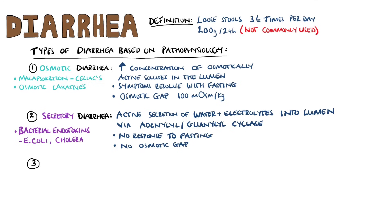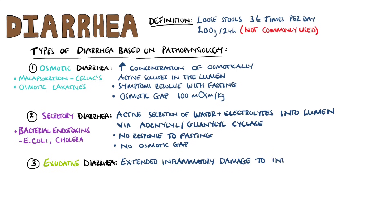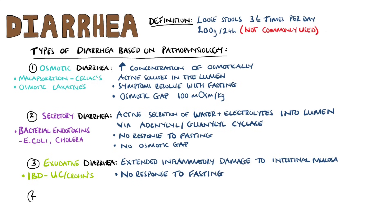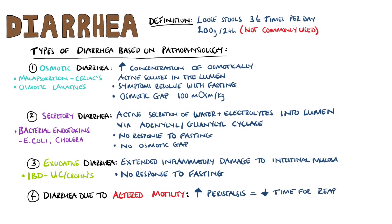Third is exudative diarrhea, resulting from extended inflammatory damage to the intestinal mucosa. It may often feature blood and mucus, and it will not respond to fasting. Lastly, we have diarrhea of altered motility, where we have an increase in peristalsis and therefore less time for reabsorption.